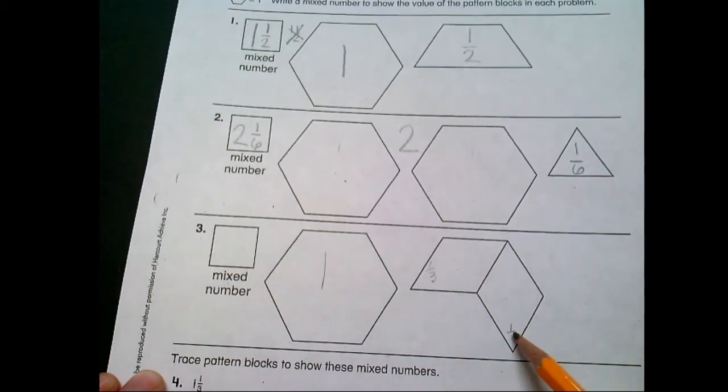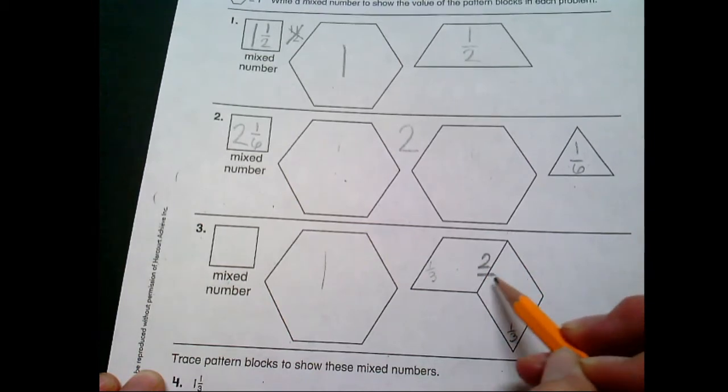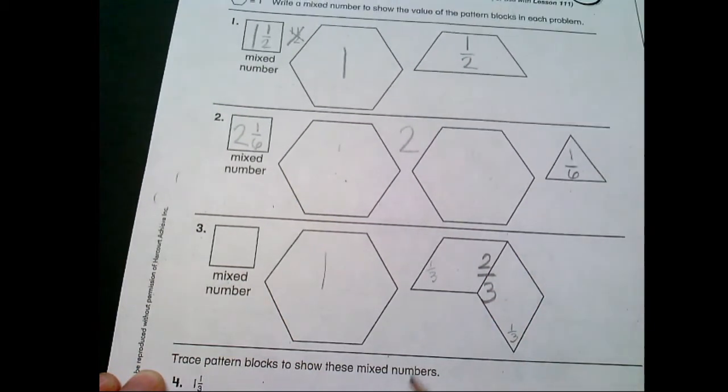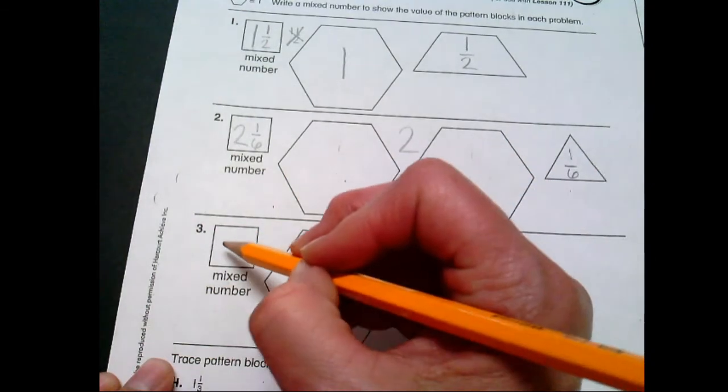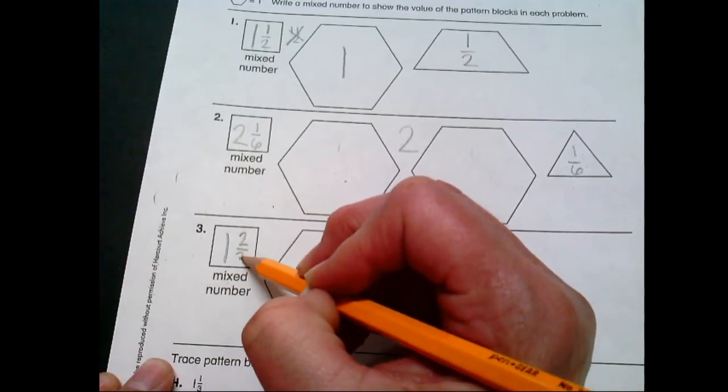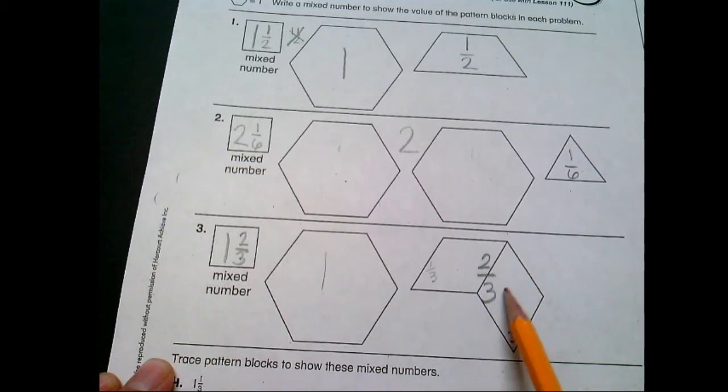So we don't just have one third, we have one third here and one third here. So our total fraction is two thirds, isn't it? So how would we do our mixed number? We would write a one and then two thirds. One and two thirds. Very good.